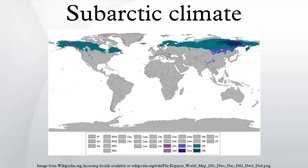Labrador, in eastern Canada, is similarly wet throughout the year due to the semi-permanent Icelandic Low and can receive up to 1,300 mm of rainfall equivalent per year, creating a snow cover of up to 1.5 m that does not melt until June.